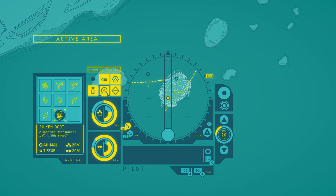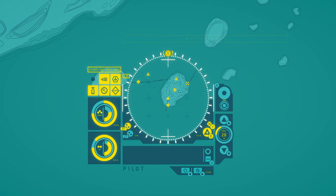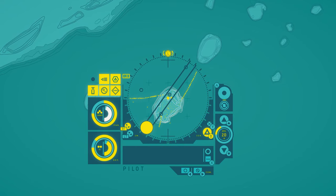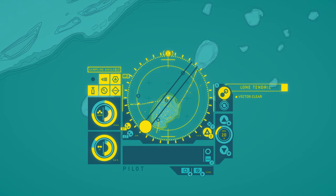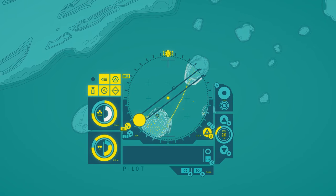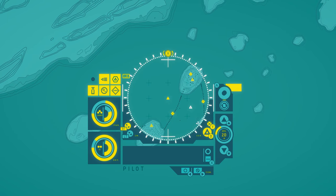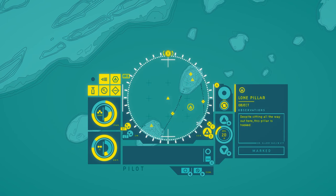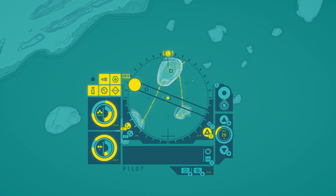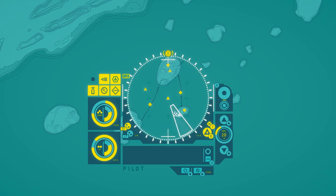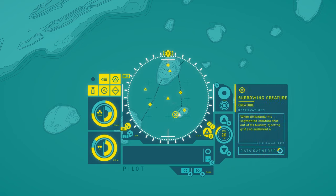Silken root. A spherical translucent ball. Is this a root? We've already sampled here, right? Just bright pollen. Lone pillar. Despite sitting all the way out here, this pillar is hooked up to the others by a long tendril. That's new also.